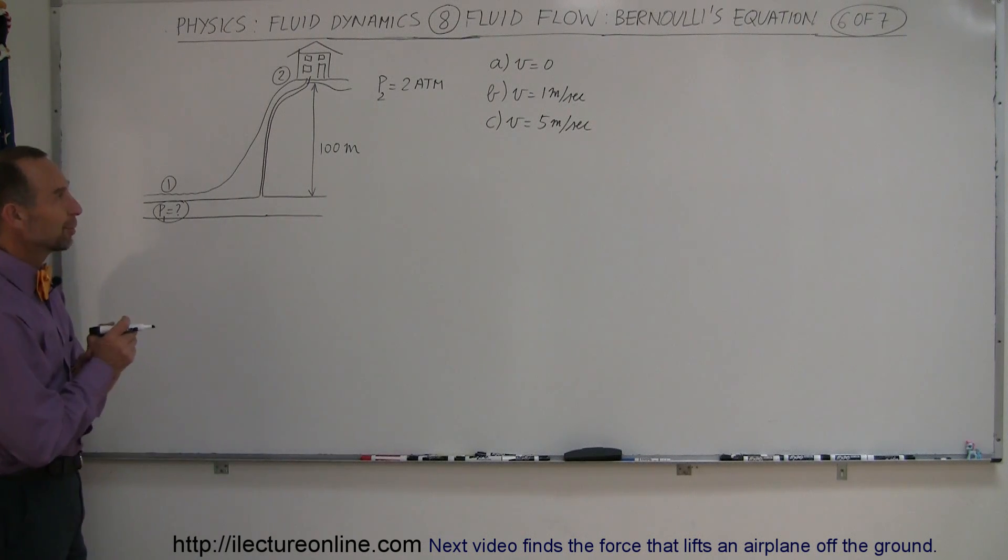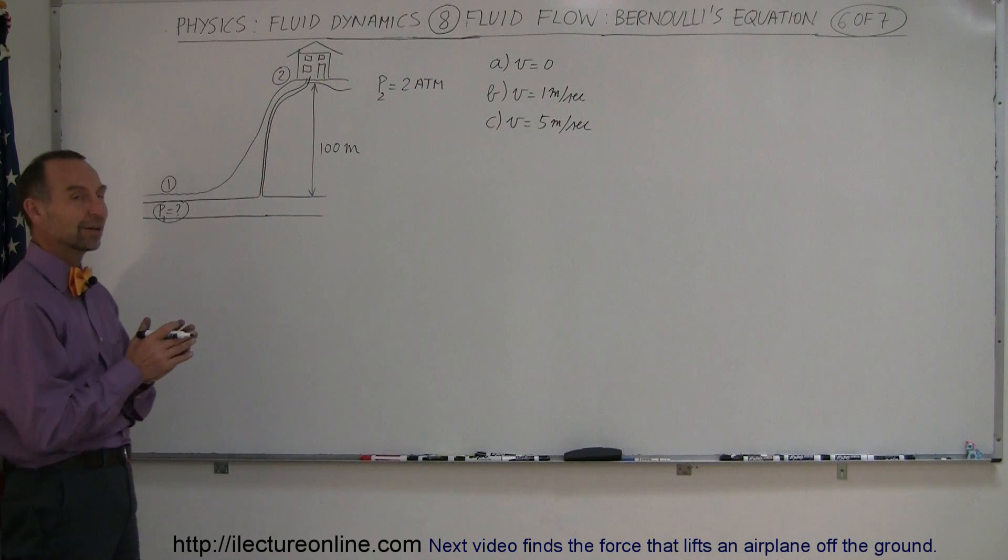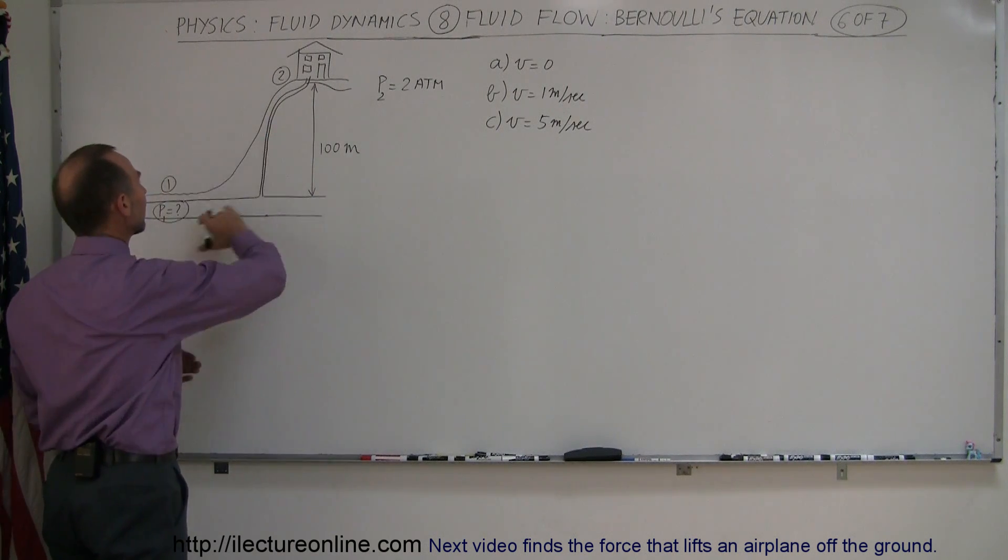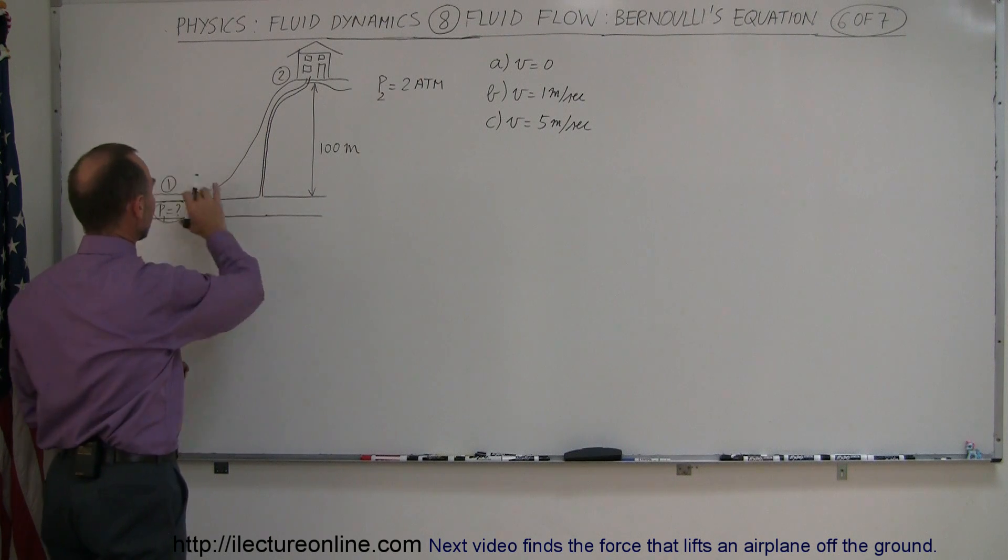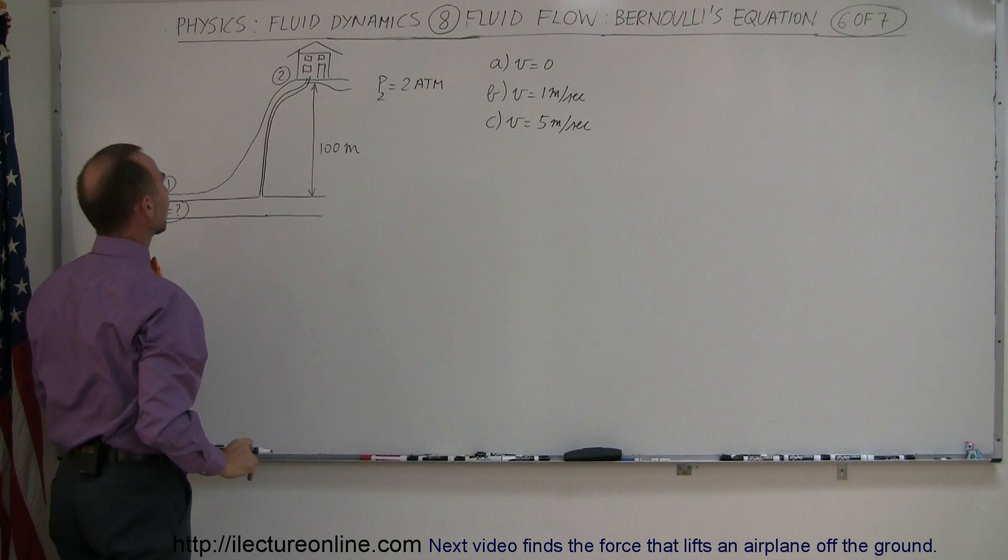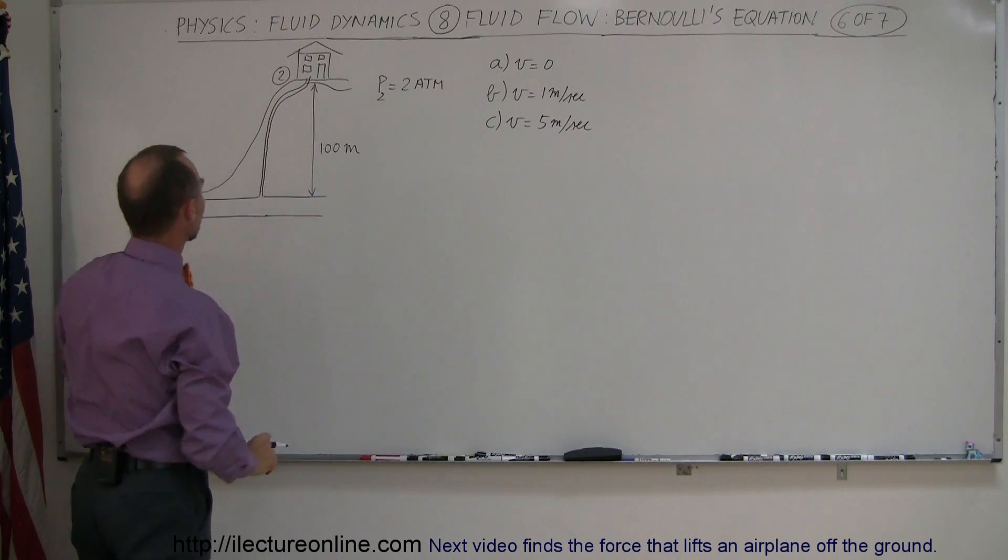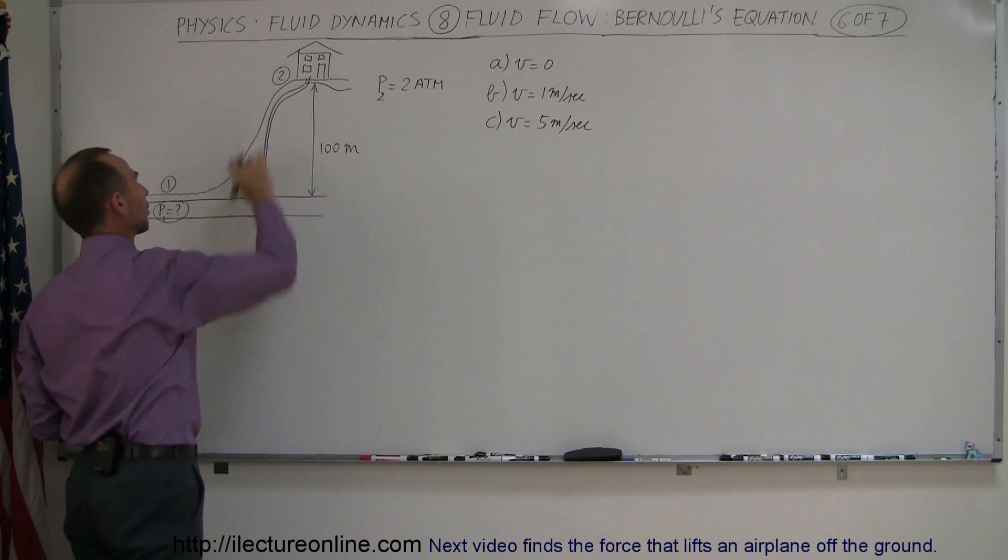Okay, another interesting example for Bernoulli's equation, a good application is for example when you try to feed a house that's up a hill with a water line. So let's say we have the main water line down here where all the city folk live and on top of the hill somebody lives 100 meters above the rest of the town and we have to provide water to that house.